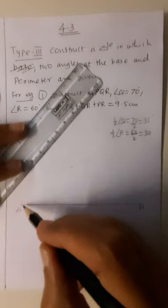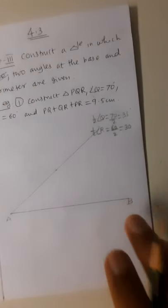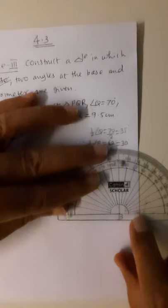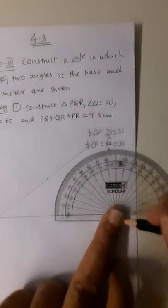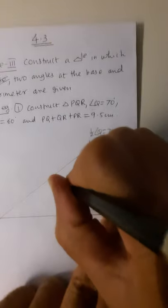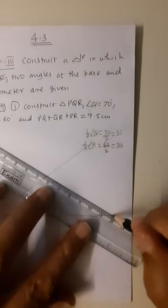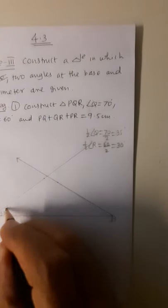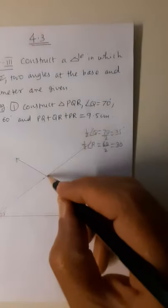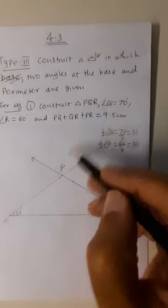I join point A with the marked dot and extend it to get the 35-degree ray. Then from point B I draw a 30-degree angle — the ray goes this side, 10, 20, 30 — I mark the dot and join point B with it. Angle A is 35 degrees and angle B is 30 degrees. Both rays meet at a point, which is called point P — the first point of triangle PQR.